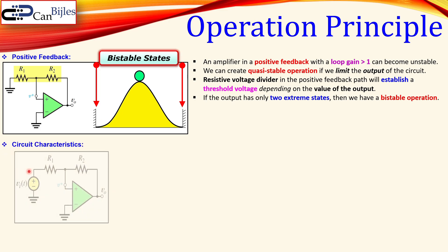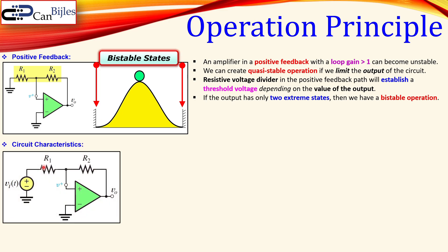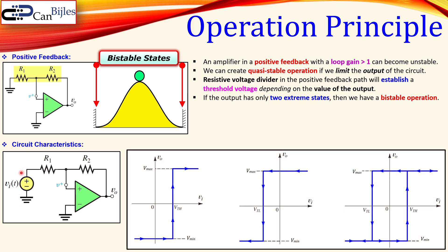Now in our circuit for this example we will discuss the non-inverting Schmitt trigger, again using the positive feedback configuration with R1 and R2. The input is placed where the ground node was. Now with positive feedback we have non-inverting Schmitt trigger operation. If your input voltage here is positive and increasing, that will increase the voltage at the V+ node. At some point this node becomes larger than the other node — this is called the threshold voltage high — and then you go from the low state up to the high state at the output.